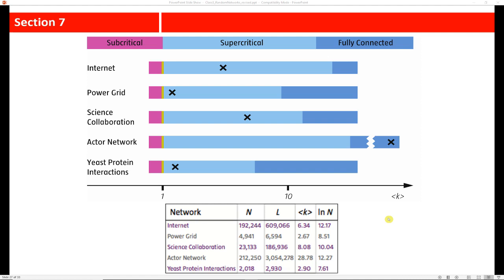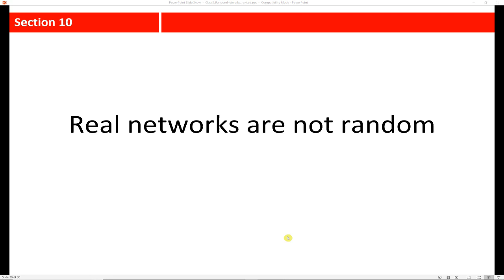So this gives an illustration of in general how these particular networks look in terms of connectedness. In the actor network, actually, because of the nature of movies, we have a fully connected graph. It might not be a complete graph, but it's fully connected. So we've established this already, but let's look at how this is true that real networks are not like random networks.